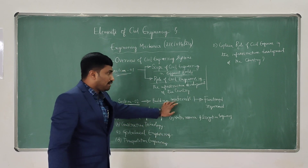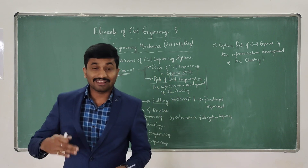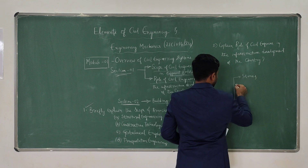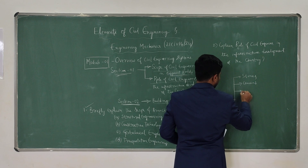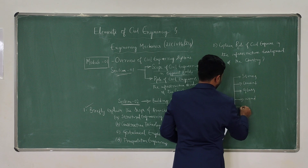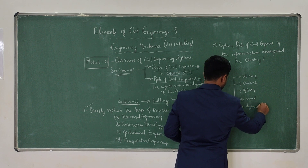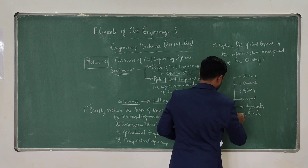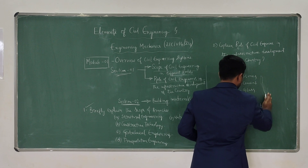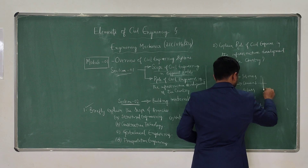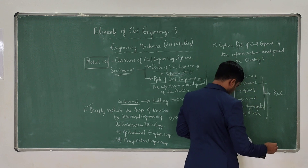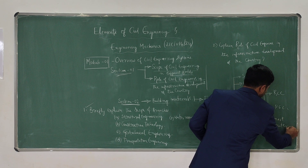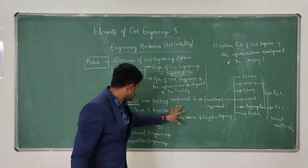Please refer to my previous videos for the role topic. In Section 2, building materials — the question may be like 'What are the requirements?' We are having several building materials: stones, cement, glass, wood, aggregates, and brick. We also have these materials combined — aggregates and cement together give us RCC (Reinforced Cement Concrete), precast structural concrete, and also smart materials. These are the topics in Section 2, building materials.